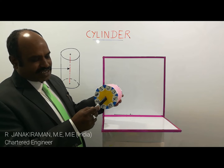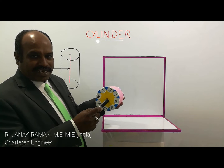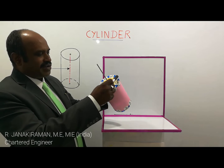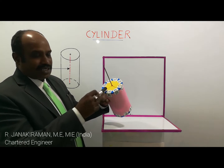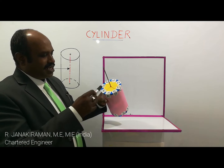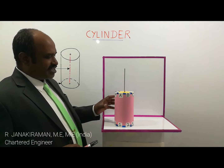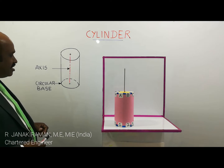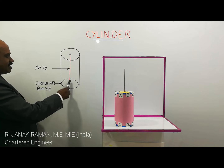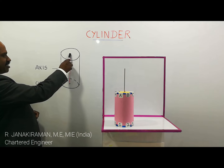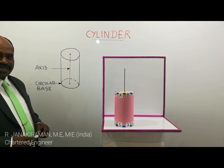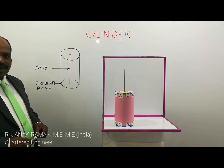This center is called the base center. This part is called the top surface. The top surface of the cylinder is also circular in shape. This is the center of the base, and this is the center of the top surface. An imaginary line joining the center of the base and the top surface is called the axis.